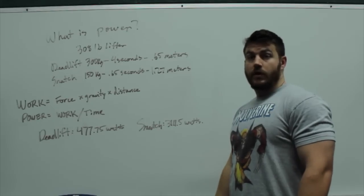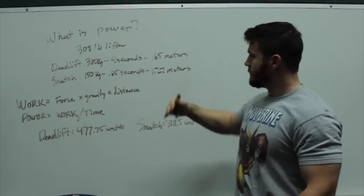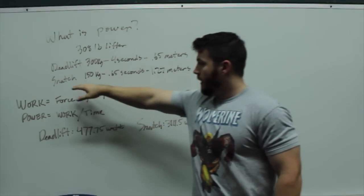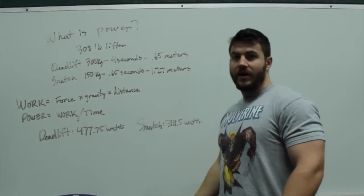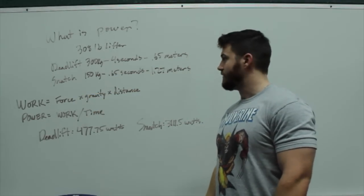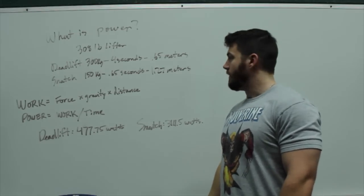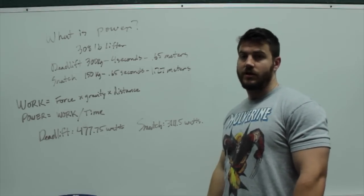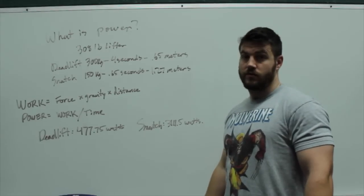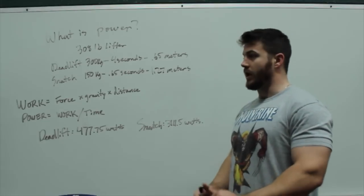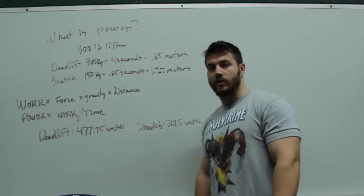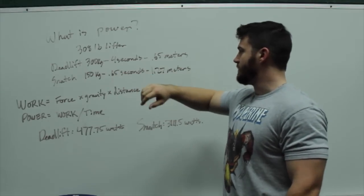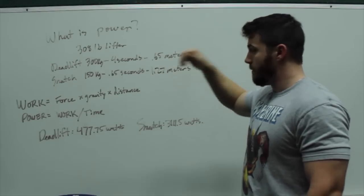The deadlift can go slow and you can grind it out. The distance from the floor to lockout is 0.65 meters. The snatch has to be completed much faster. There's no way to grind the snatch out. You just have to complete the lift, same with the clean and jerk. These are things that you have to do quickly where you bring the bar to its racked position as fast as possible. You can't go slow or you miss the lift. The snatch takes 0.65 seconds and moves a distance of 1.27 meters.